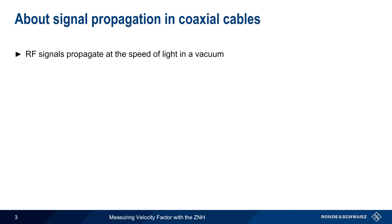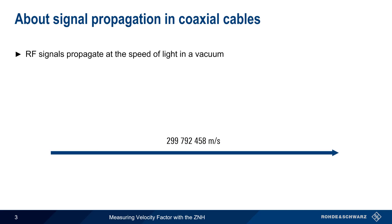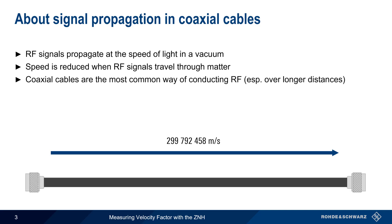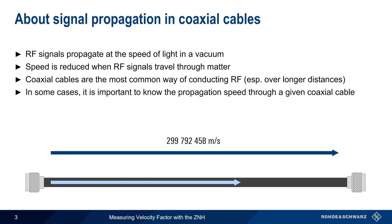Electrical signals propagate at the speed of light in a vacuum, but this speed is reduced when signals travel through matter. Coaxial cable, or coax, is the most common way of conducting radio frequency signals, particularly when longer distances are involved. For some applications and measurements, it's important to know the speed of propagation through a given coaxial cable, and this speed is normally quantified as the cable's velocity factor.